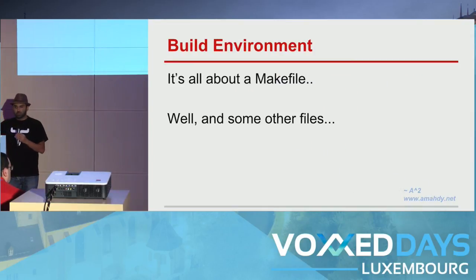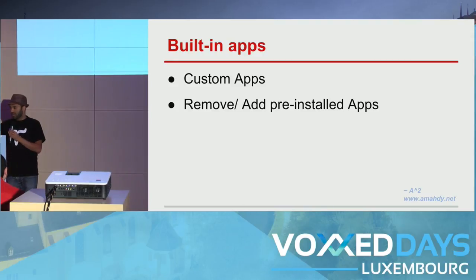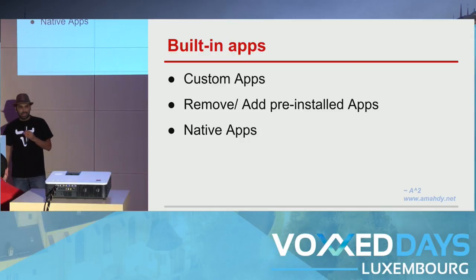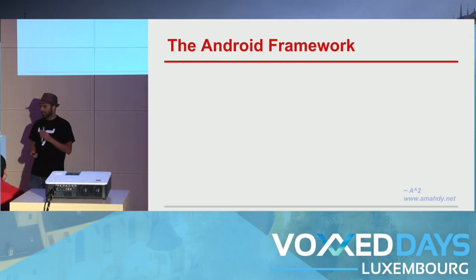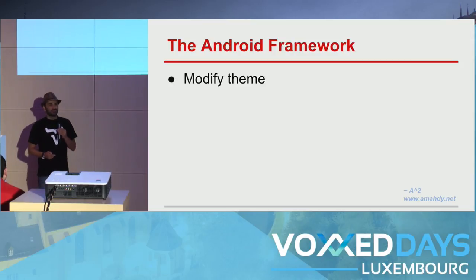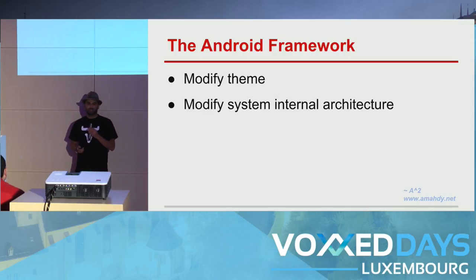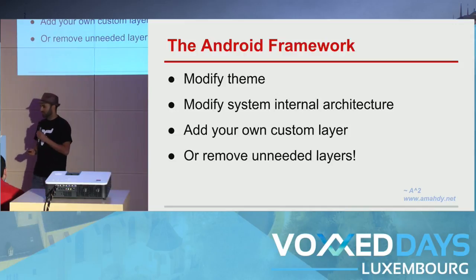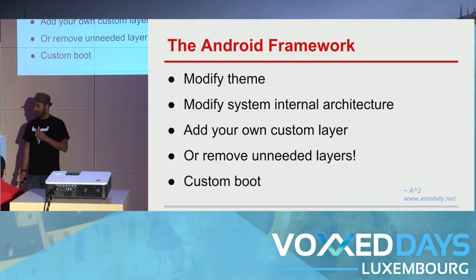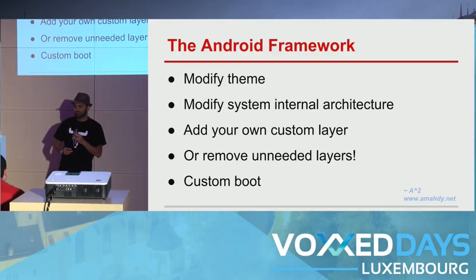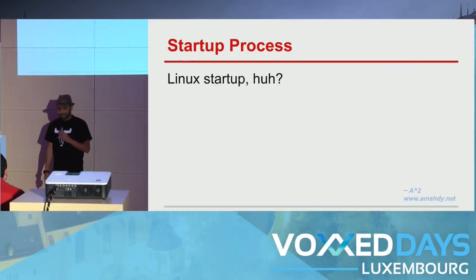The build environment is about how to modify the makefile, how to create custom apps or remove or add pre-installed apps, make your ROM with pre-installed apps, and then handle native apps. One step before finally: the Android framework — how to modify the theme or the internal architecture and add your own custom layers, or remove unneeded layers and services. Also, you can modify the custom boot screen. Many people are interested in having their own branded boot screen instead of showing Android.